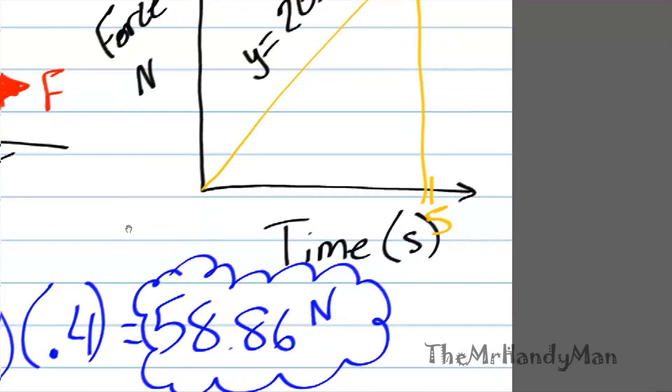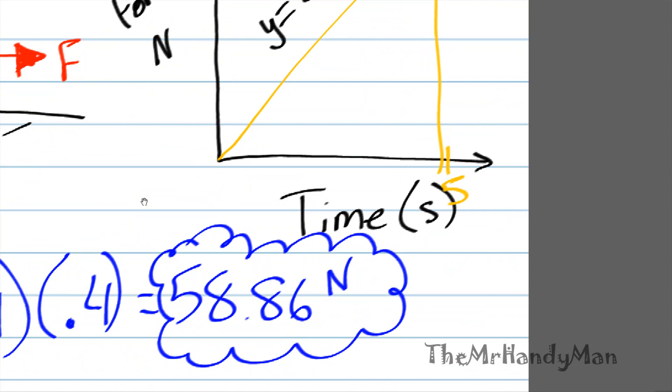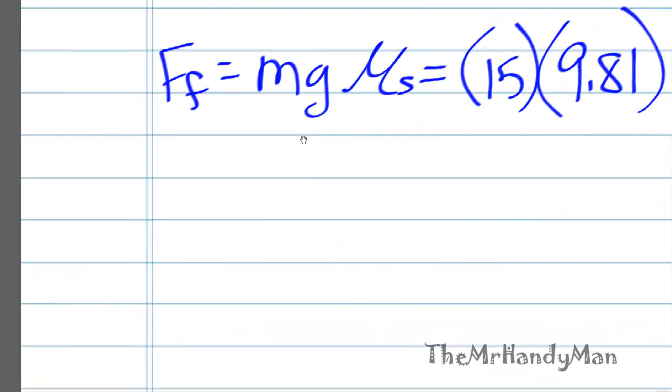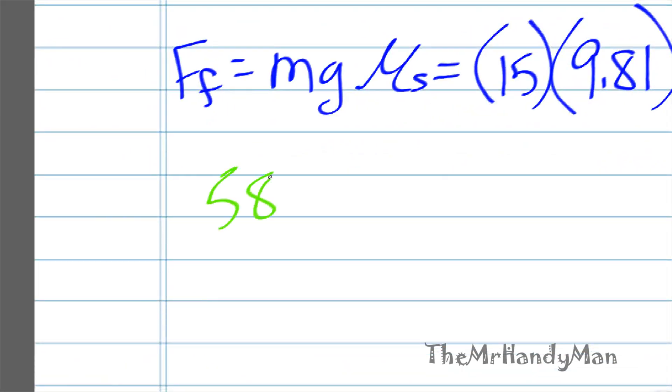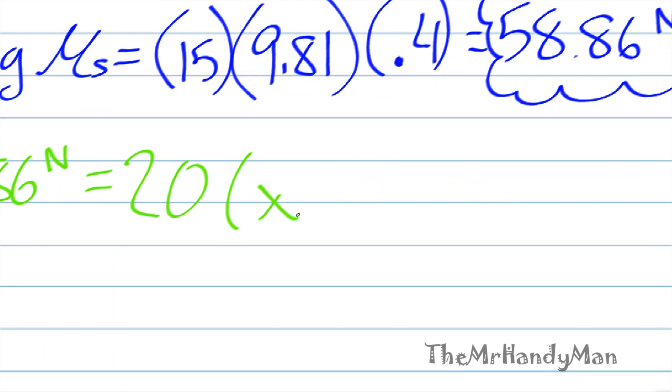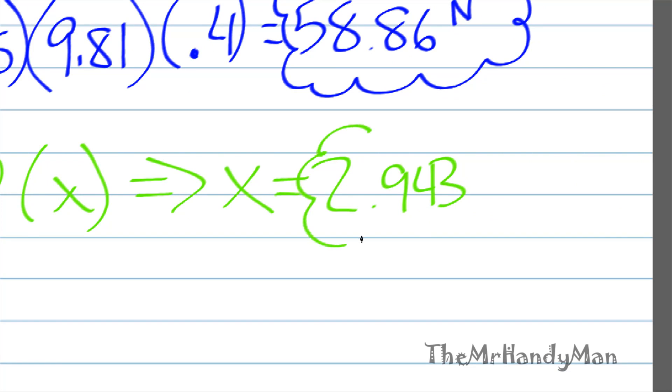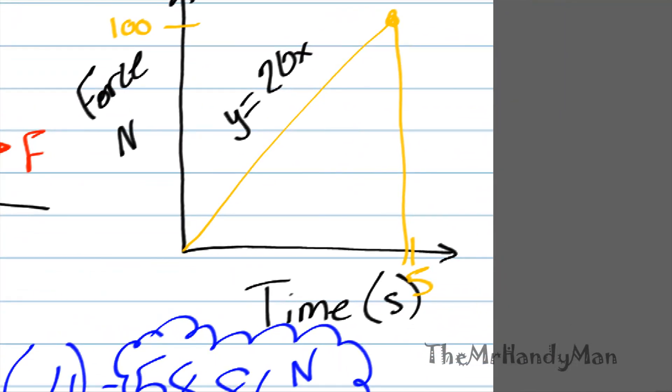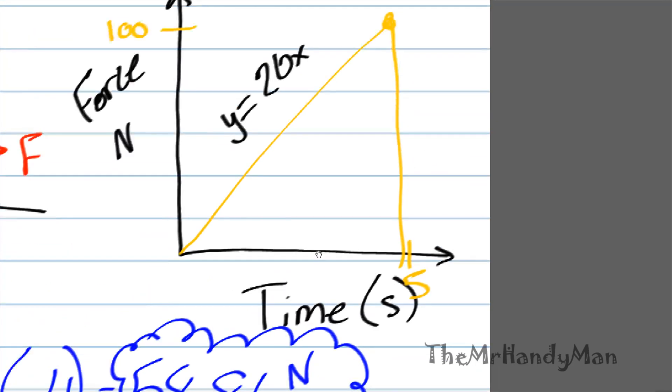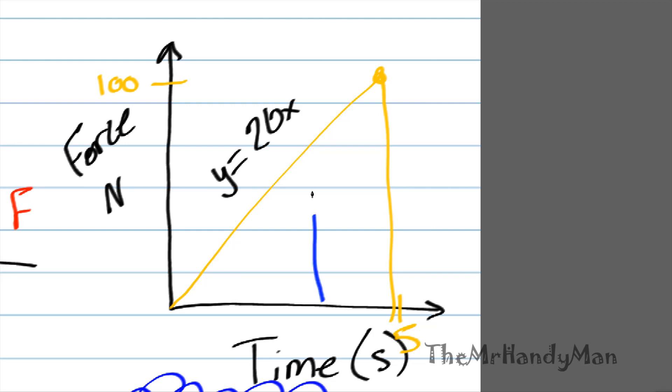What I'm going to do is adjust the situation so that we can negate the resistance due to the kinetic friction. Let's calculate it out: 58.86 newtons is going to equal 20 times x. If we solve for that x, x is going to equal 2.943 seconds. So after almost three seconds we are actually going to start moving. So really it's a good amount of time into it.